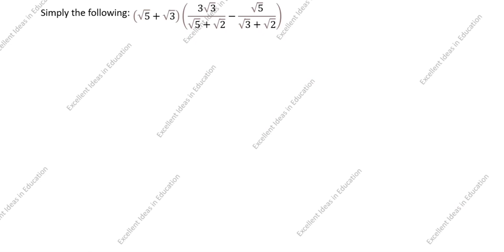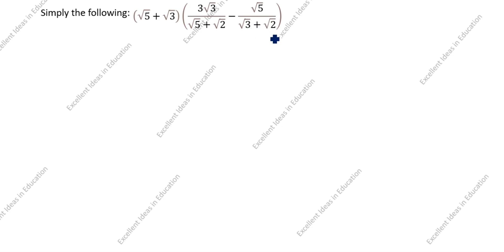Hi friends, welcome to my channel Excellent Ideas and Education. Today we are going to solve this rationalize the denominator problem. Simplify the following: root 5 plus root 3, open the bracket, 3 root 3 divided by root 5 plus root 2, minus root 5 divided by root 3 plus root 2.